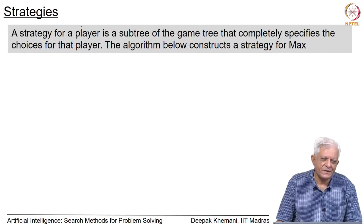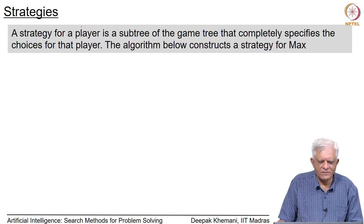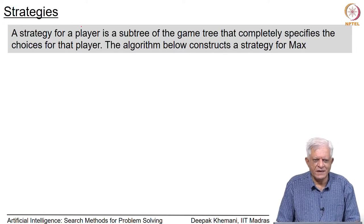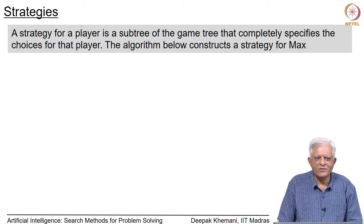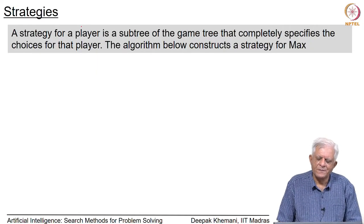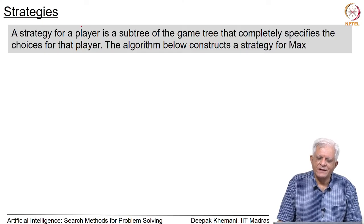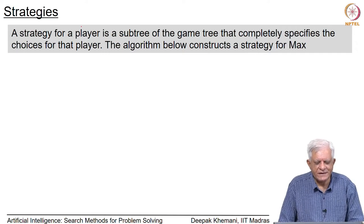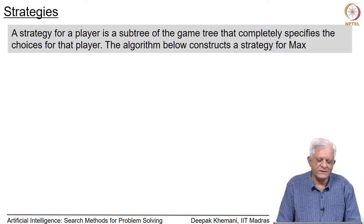There is a notion called strategy. In games like the prisoner's dilemma you have to make only one move. But in multi-move games, you make a move, then the opponent makes a move, then you again, and so on. In such a scenario, we define a strategy for a player as a sub-tree of the game tree that completely specifies the choices for that particular player. Once I have decided that in a certain board position I will make a particular move, I am freezing my choices.